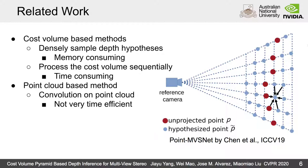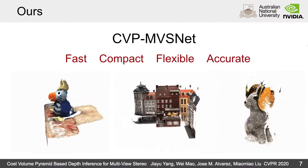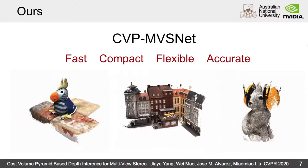To provide a computationally efficient MVS network, we proposed the CVP-MVSnet. It is fast, compact, flexible, and can produce high-accuracy depth estimation.